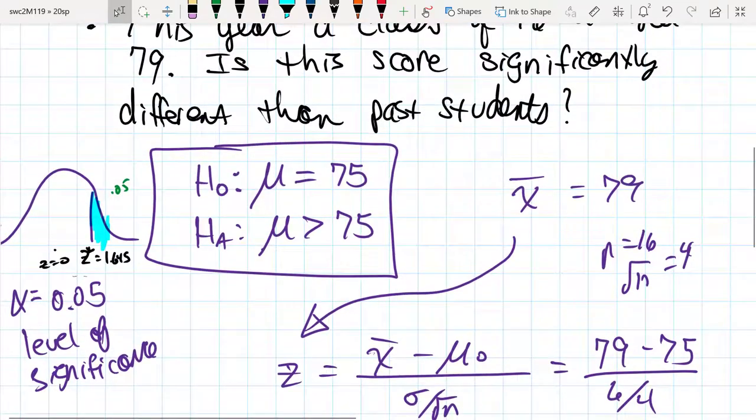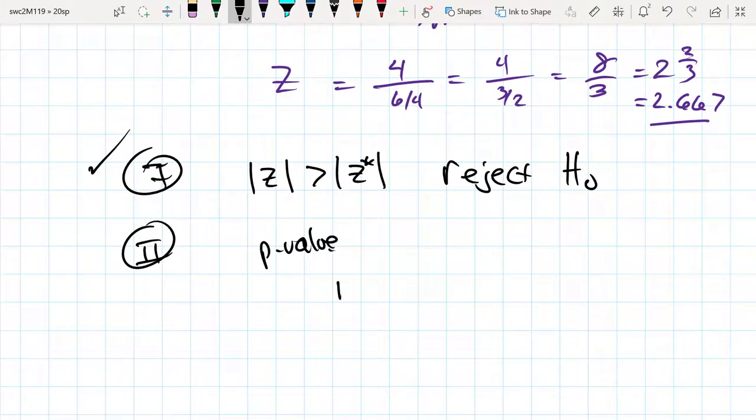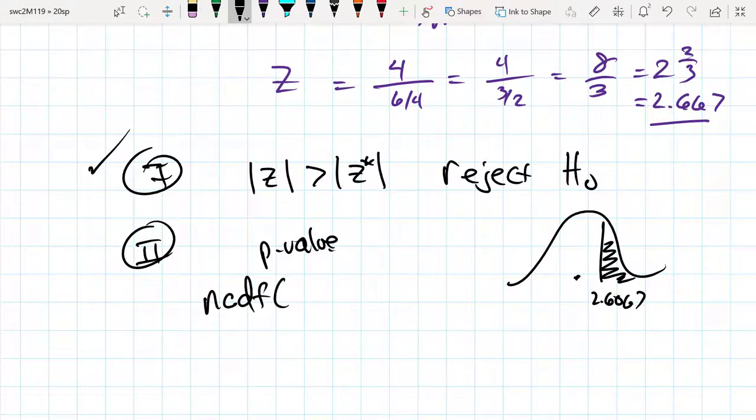The p-value for this test statistic, we had 2.667, and that would be equivalent to finding the likelihood of being that far or further from the null hypothesis. The p-value for that is going to be normal CDF starting from 2.667, or 2.6667, all the way out to infinity.